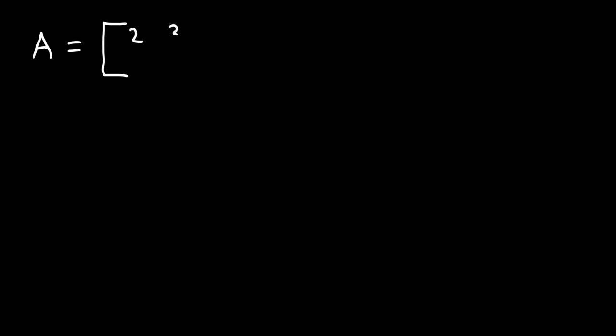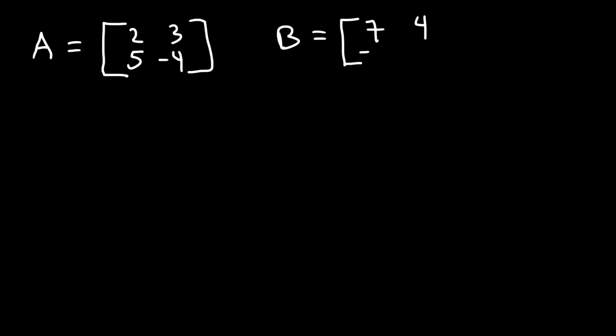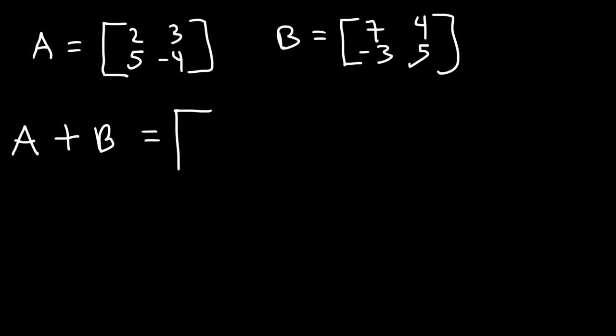Let's focus on adding matrices. If matrix A has the numbers 2, 3, 5, negative 4, and matrix B has 7, 4, negative 3, and 5, what is the sum of matrix A and B? When adding two matrices, all we need to do is add the corresponding elements. Also, a 2 by 2 matrix can only be added to another 2 by 2 matrix — the number of rows and columns must be the same when adding or subtracting matrices.